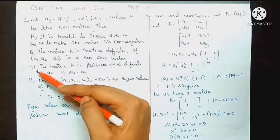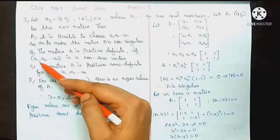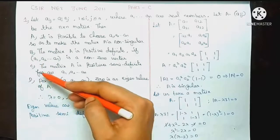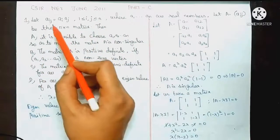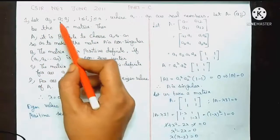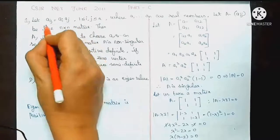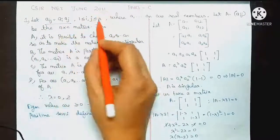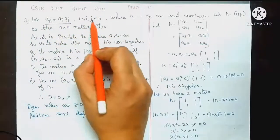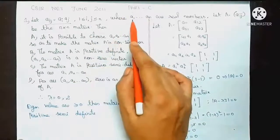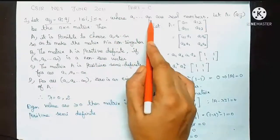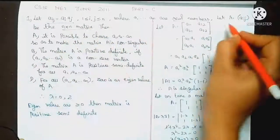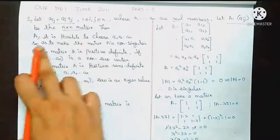Let A, B, C. If we have one option, we have to correct it. Let Aij equal to Aij. If we say Aij equal to Aij, we will split it. I and J vary from 1 to N. A1, A2, and so on — Aij is equal to an N cross N matrix. A is equal to an N cross N matrix.